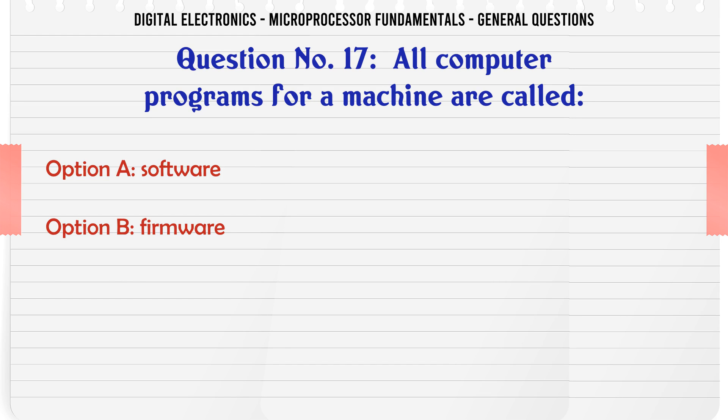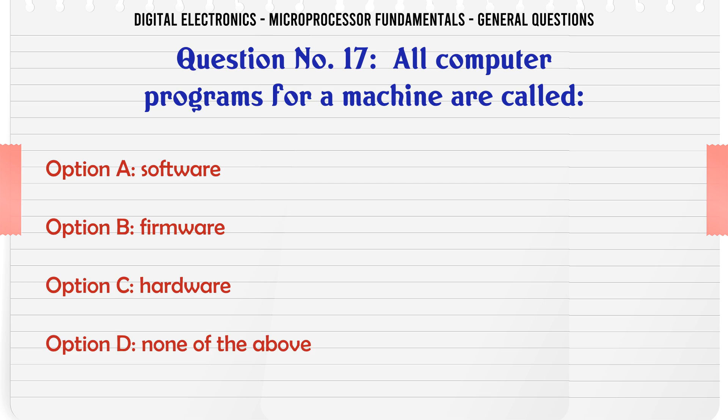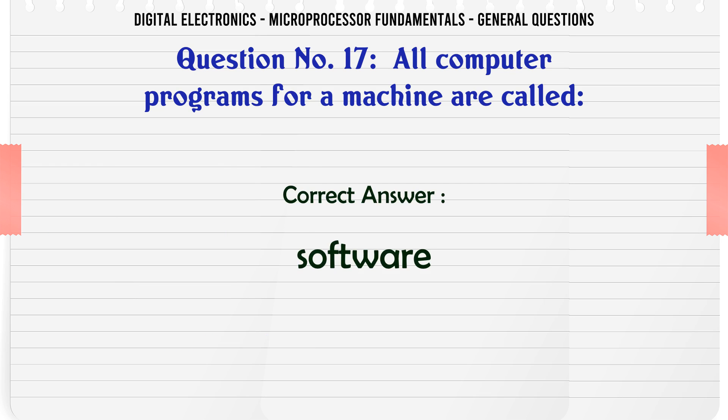All computer programs for a machine are called: A. Software, B. Firmware, C. Hardware, D. None of the above. The correct answer is Software.